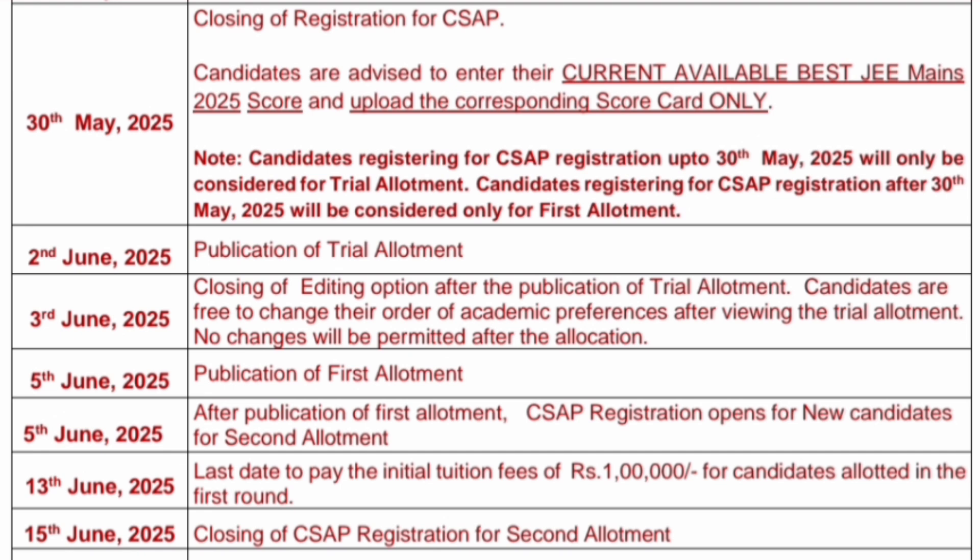2nd June is the publication of the trial allotment result. After that, one day will be given so that you can edit your option entries. You can change your option entry after the trial allotment, but no changes are permitted after the allocation. So you have to be very clear with your order of academic preference for the first round.